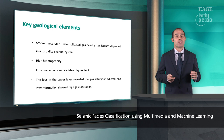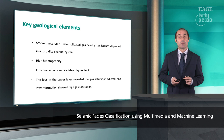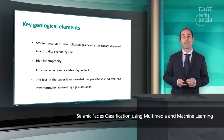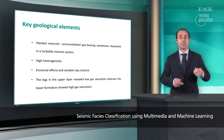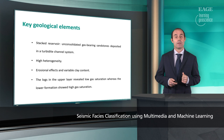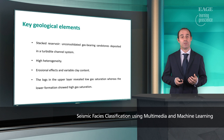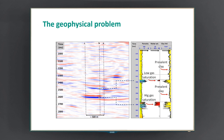The key geological elements of this specific example are as follows. We have a stacked reservoir consisting of unconsolidated gas-bearing sands deposited in a turbidite channel system, with very high heterogeneity, strong erosional effects, and variable clay content. This is a stacked reservoir consisting of two different layers: in the upper layer we have low gas saturated sands, and in the lower formation we have high gas saturated sands. The seismic signal is not very different in these two cases, making it difficult to distinguish the two scenarios.